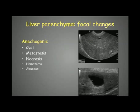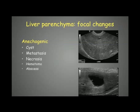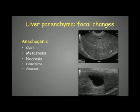The liver parenchyma can also present focal changes. Focal anechoic lesions are mostly small or large cysts — very hypo- to anechoic structures that create distal acoustic enhancement, appearing brighter underneath the cyst due to decreased attenuation of the ultrasound beam by fluid. However, metastases, necrotic areas, hematomas, or abscesses can also appear anechoic.